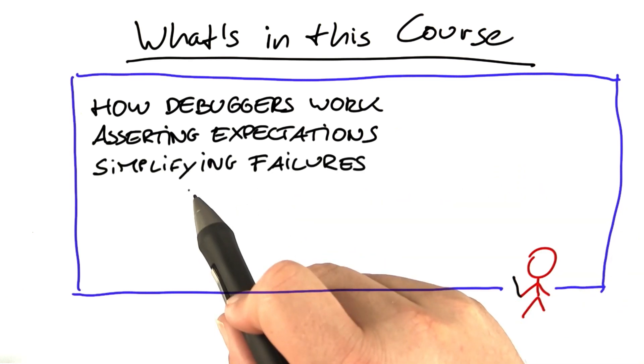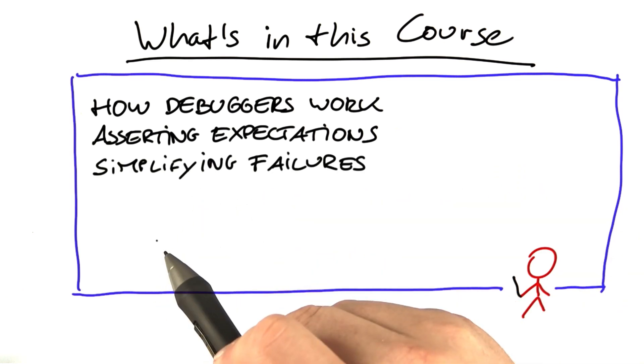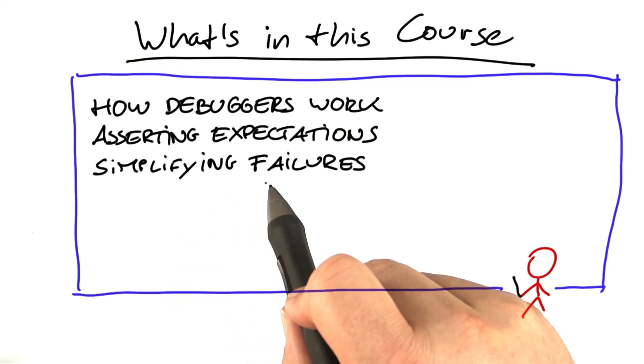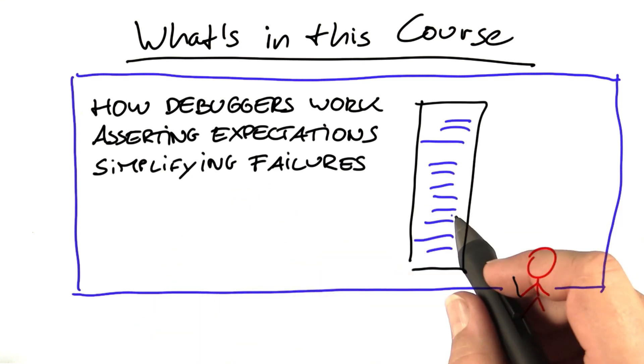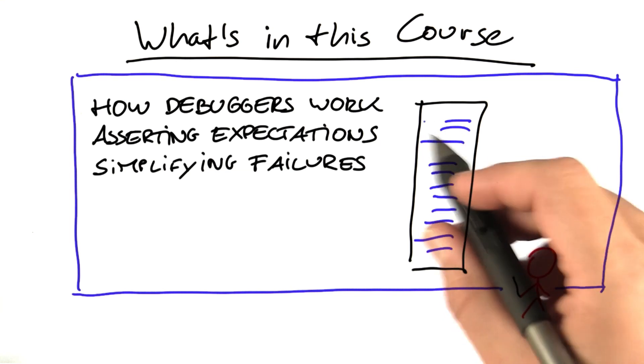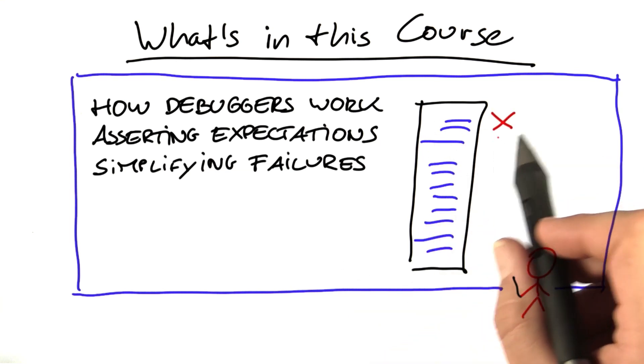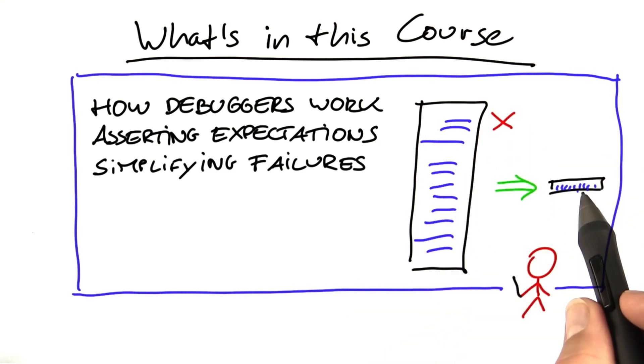In unit 3, I'm going to show you a technique named delta debugging, which automatically simplifies problems. For instance, here's this 900-line HTML file, which causes a crash in a program which processes it. With delta debugging, you can reduce this to just the eight characters that produce the bug just as well, and all of this automatically.